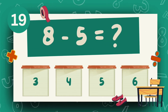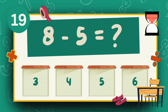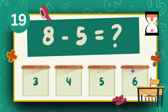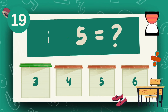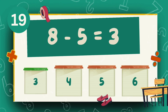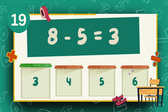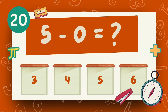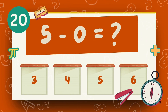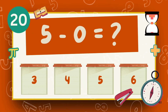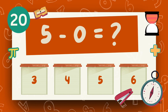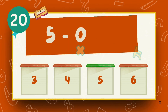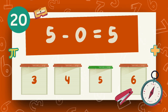What is 8 minus 5? The answer is 3. What is 5 minus 0? The answer is 5.